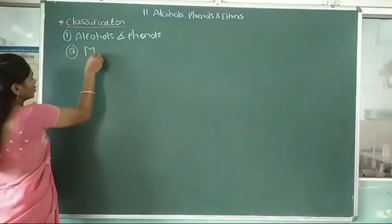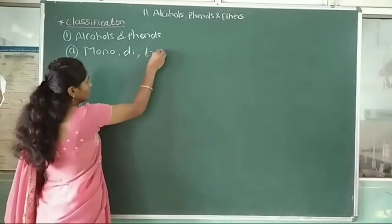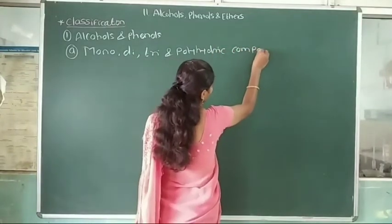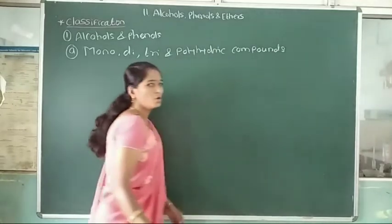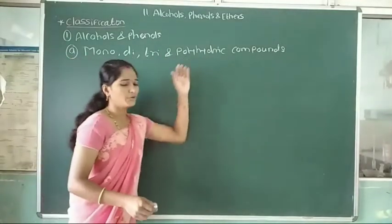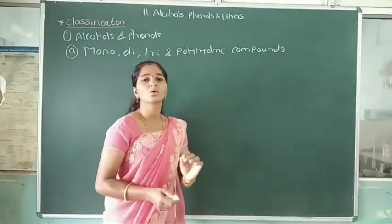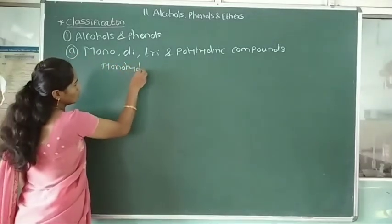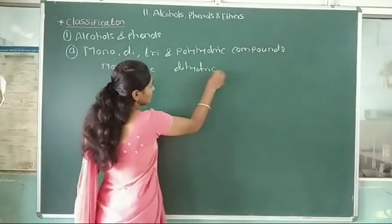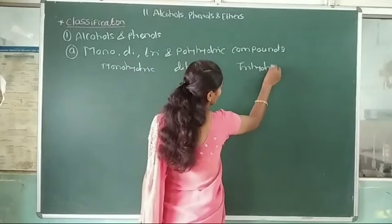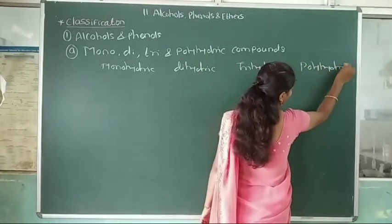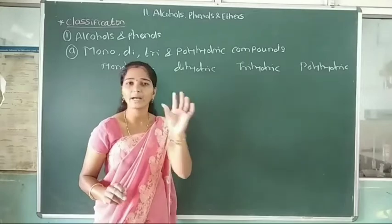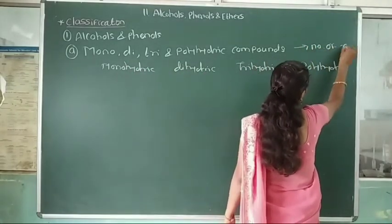The first classification of alcohols and phenols is as monohydric, dihydric, trihydric, and polyhydric compounds, on the basis of the number of hydroxy groups attached to the carbon atoms.